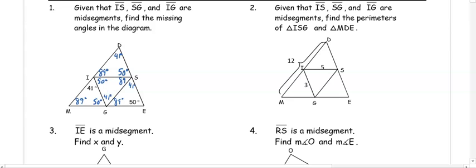Remember that the outside triangles are all going to have the same angle measures, and then we can figure out which one is missing from each group of three in the inner triangle.